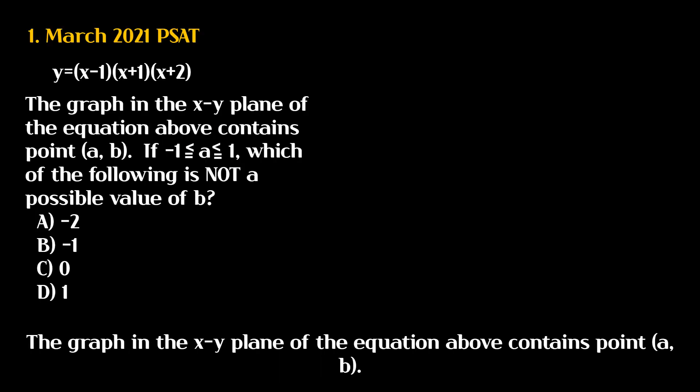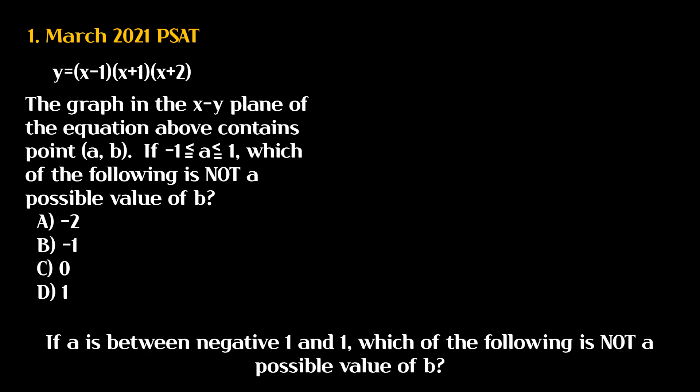The graph in the XY plane of the equation above contains point AB. If A is between negative 1 and 1, which of the following is not a possible value of B?